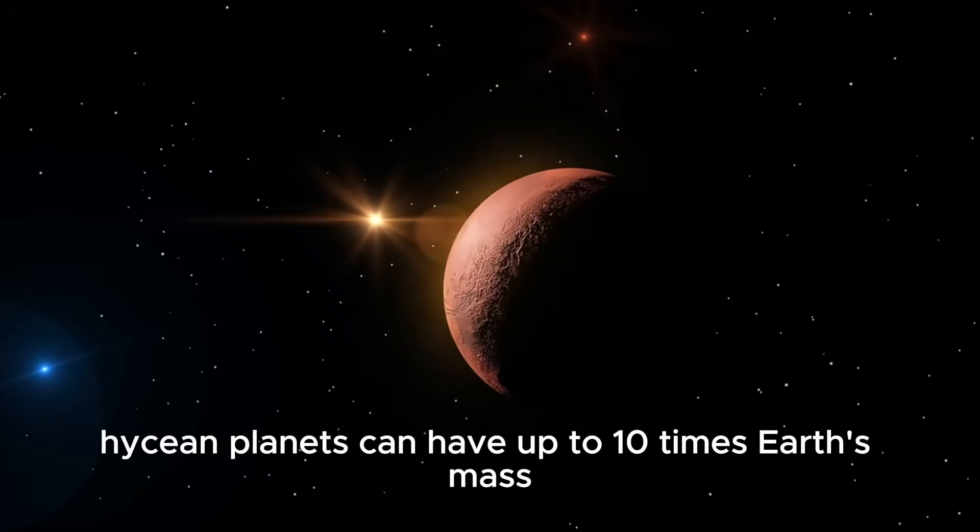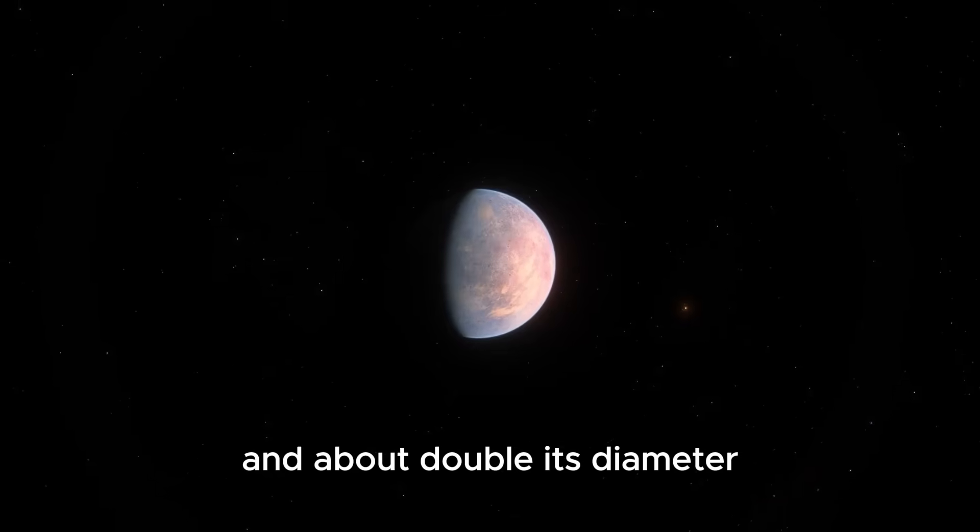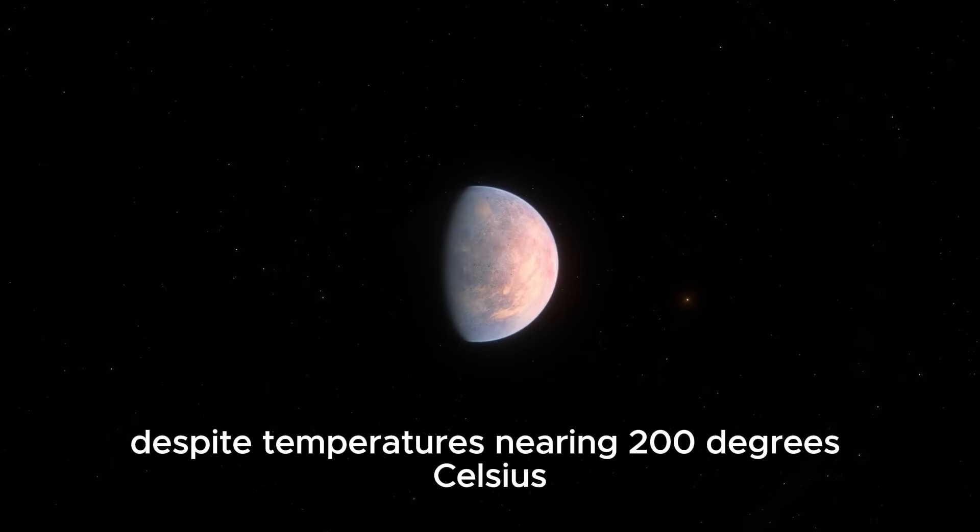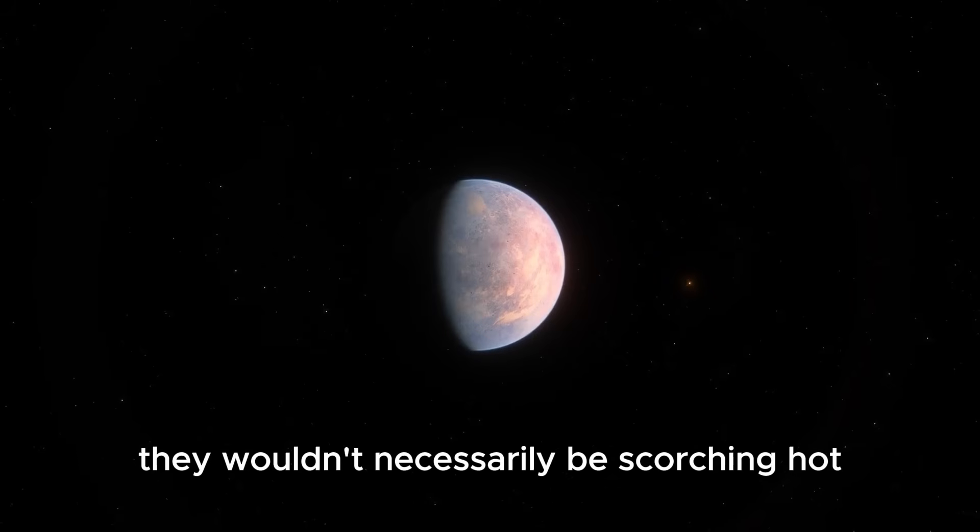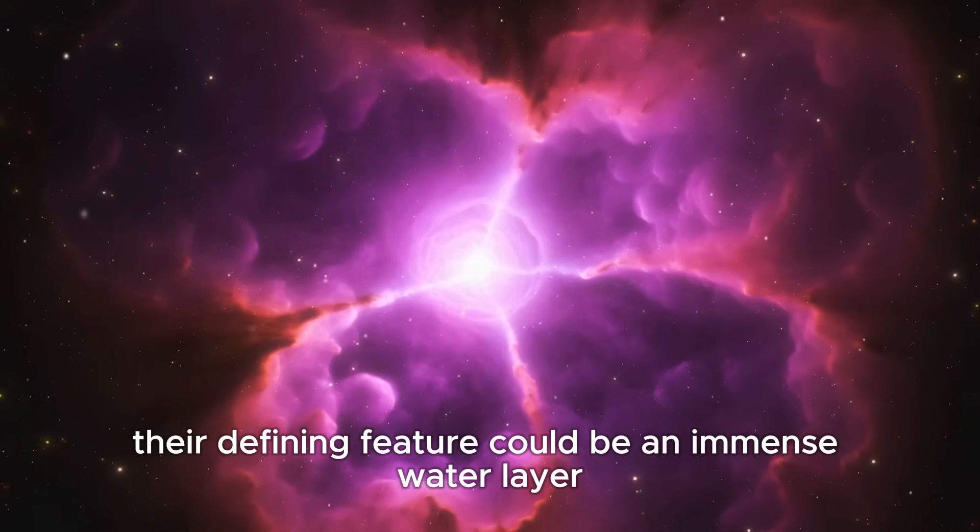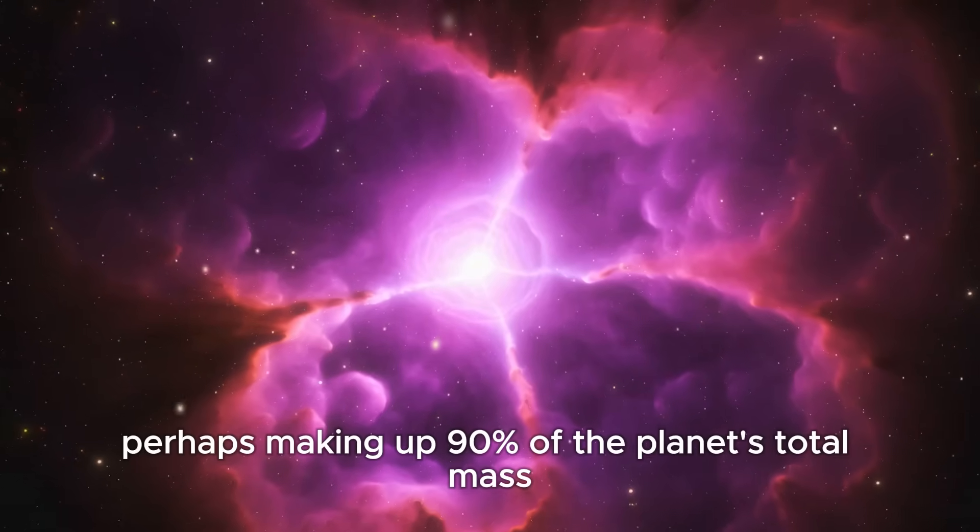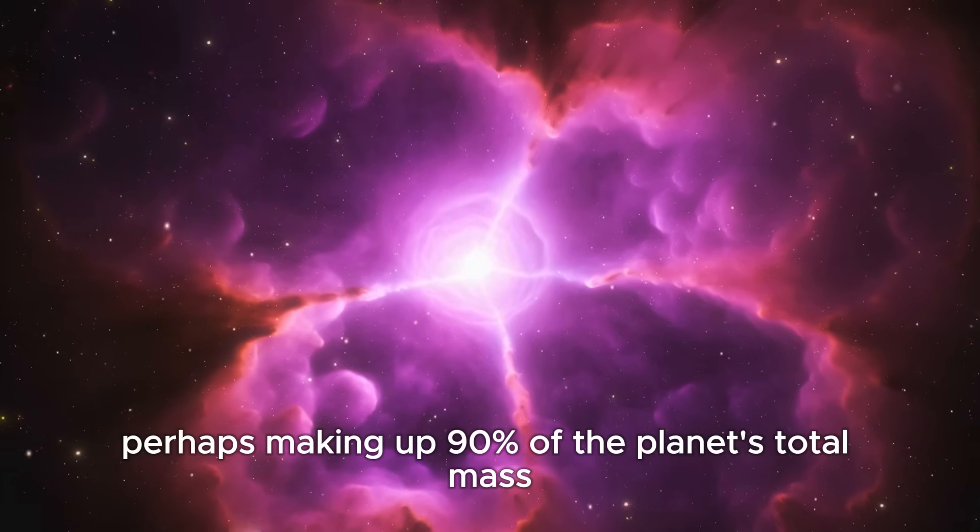Hycean planets can have up to 10 times Earth's mass and about double its diameter. Despite temperatures nearing 200 degrees Celsius, they wouldn't necessarily be scorching hot. Their defining feature could be an immense water layer, perhaps making up 90% of the planet's total mass.